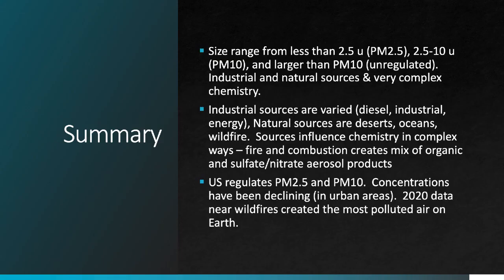To summarize: atmospheric particles are separated into different size classes and regulated as PM2.5 and PM10. Anything bigger than that is assumed to be natural and is not regulated. There are many different natural and industrial sources of particles with a complex mix of chemical compositions related to how they are produced — which is one reason we use size categories rather than something more complicated. US regulations focus on PM2.5 and PM10, and overall concentrations in these categories have been declining nationally for the last few decades. However, the 2020 fire season has pushed up concentrations in some parts of the country pretty dramatically.